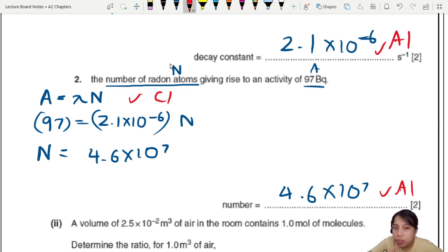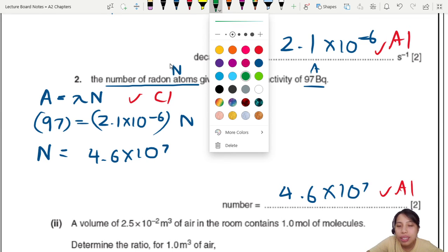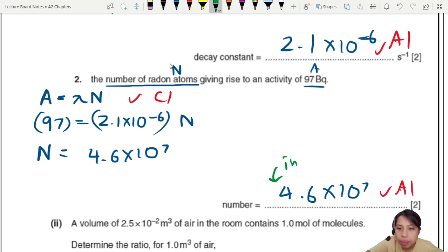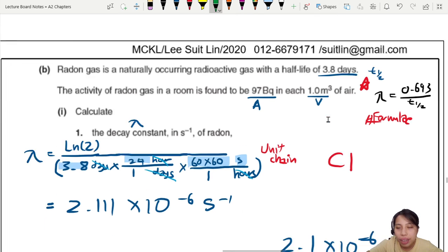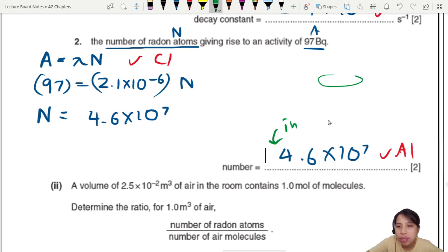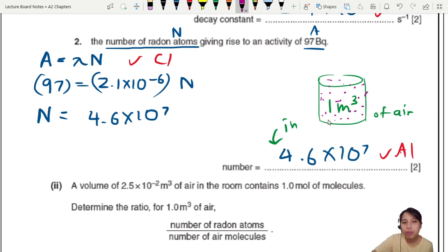You write equation, you get a mark. So you write equation, you get a mark. You sub in already, you get another mark. Now note that this is the number of atoms in where? Go back to the earlier part. Radon gas is 97 becquerels in 1 meter cube of air. So in 1 meter cube, this is the number of atoms of radon. Number of nuclei. Now the last part, this is relevant for the last part.